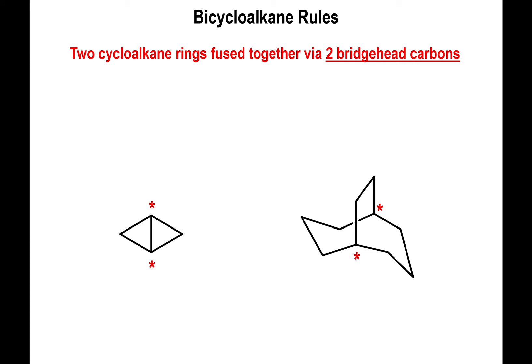Bicycloalkanes. In the previous video we mentioned that bicycloalkanes are simply fused cycloalkanes. Technically speaking, we're going to have two fused rings together, and the characteristic of this type of system is that we're going to have what we call bridge heads. In particular we're going to have two of them, and highlighted here in the two bicycloalkanes you can see the bridge heads.